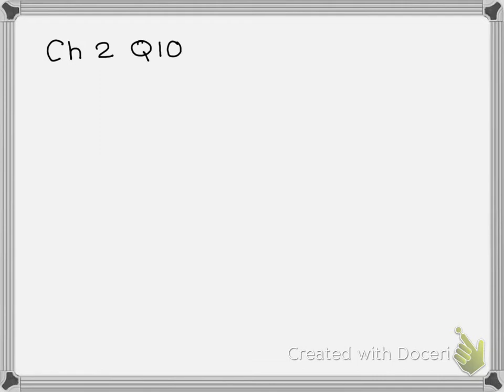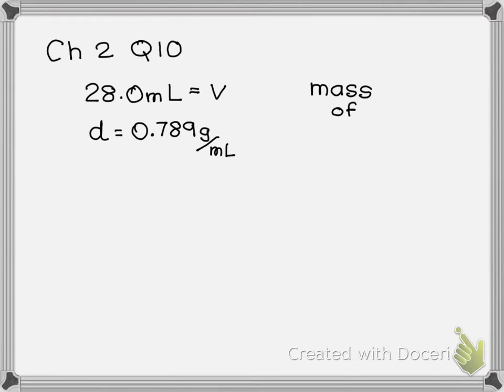So question 10 says a 28 milliliter sample of ethyl alcohol. So it's giving me a volume. It tells me on my example that I have 28 milliliters, and it tells me it's ethyl alcohol. And it says it has a density of 0.789 grams per milliliter. So they gave me a volume of my sample and a density of my sample. And it says it's added to a graduated cylinder that has a mass of 40.3 grams. So this is not the mass of my liquid. This is the mass of the cylinder that I am placing it in.